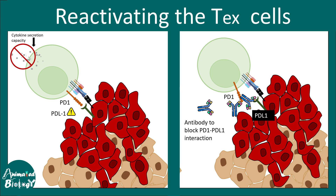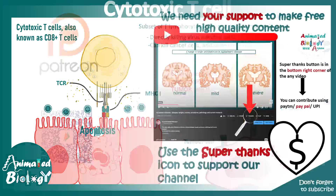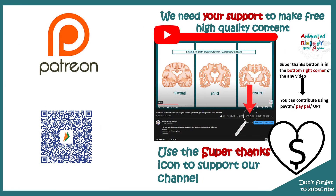Overall, cytotoxic CD8 positive T cells differ from T helper cells — helper cells secrete cytokines and activate B cells, while cytotoxic CD8 positive T cells are proactive killers that do the job themselves. They are required in two key contexts: virus elimination and tumor cell elimination. If you found this video useful, give it a thumbs up, share with your friends, and support the channel.